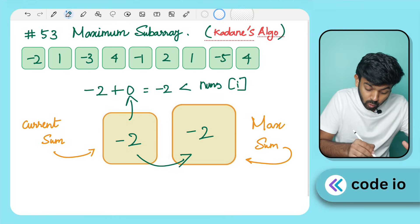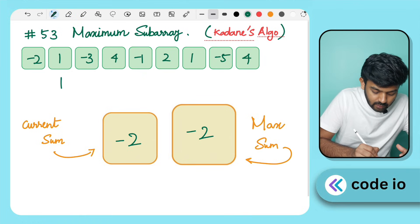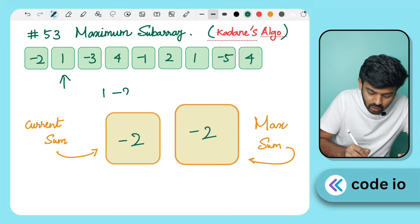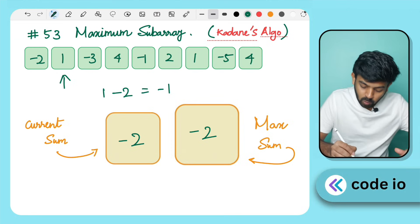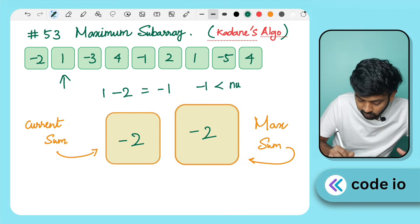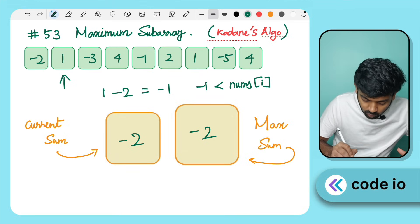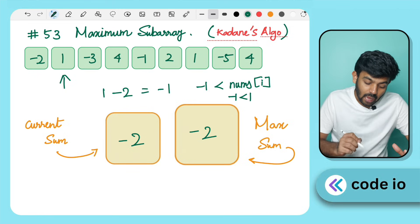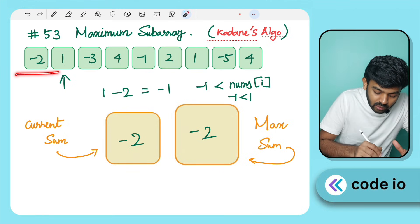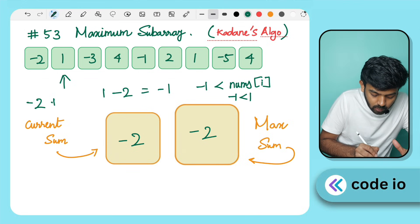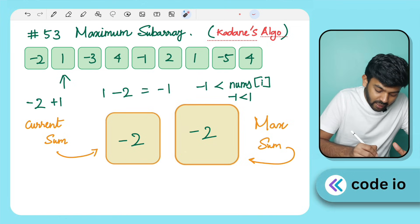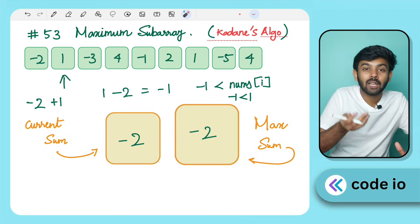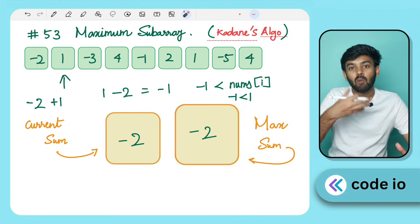In the next iteration, the element is 1. We add 1 to CurrentSum: 1 plus minus 2 equals minus 1. We compare minus 1 with nums[i] which is 1. Since minus 1 is less than 1, starting fresh from this element gives a better sum. So we replace CurrentSum with 1.